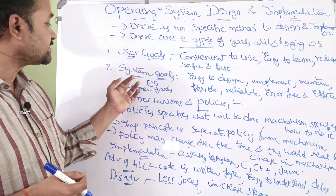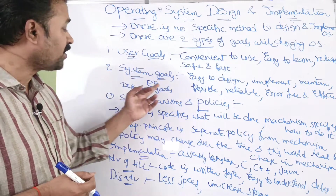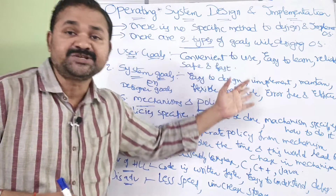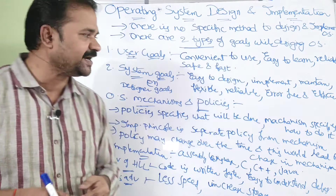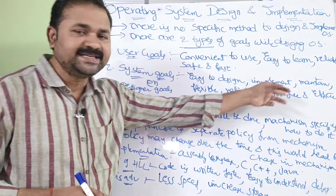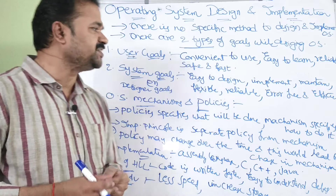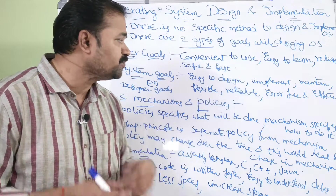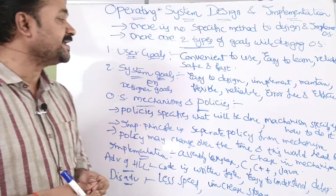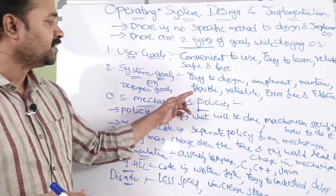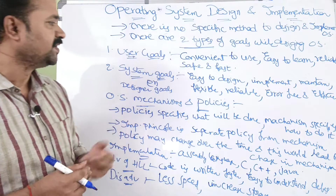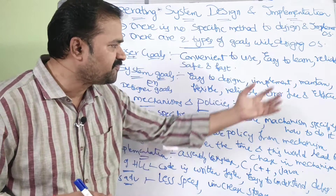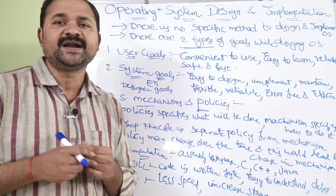Whereas the system or designer goals are: easy to design the operating system, easy to implement the operating system, easy to maintain the operating system. It should be flexible, reliable, error free, and efficient.